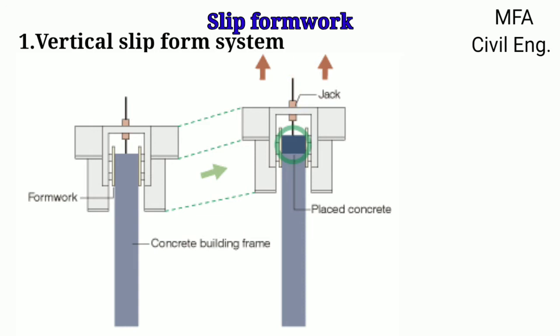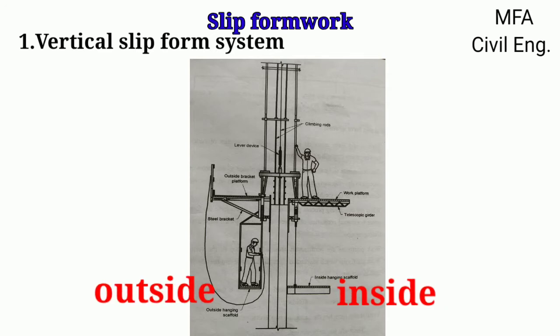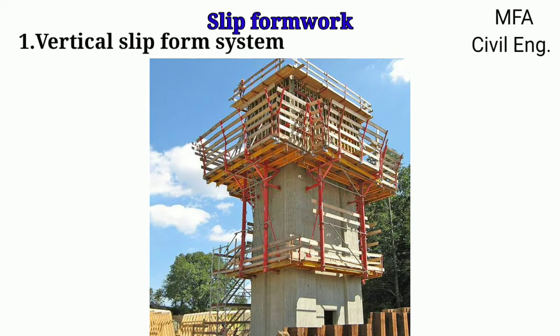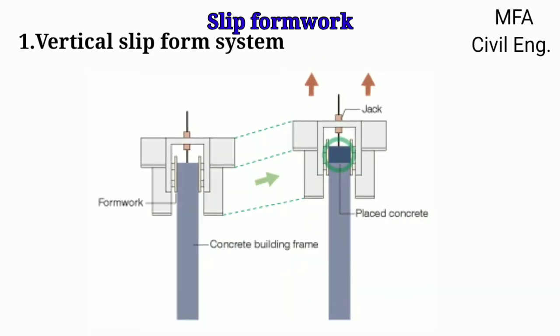Work platforms are permanently attached to the top of the vertical slip form and are suspended on the inside and outside of the slip form. The main advantage of the vertical slip form is that there is no need to build and dismantle excessive scaffolding. However, it has two limitations: the wall must be vertical and must trace an unchanging horizontal projection.